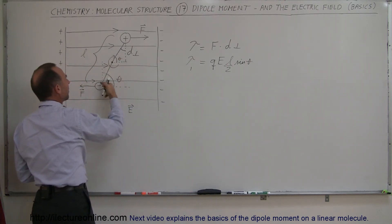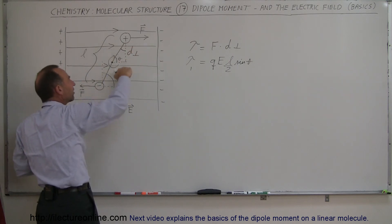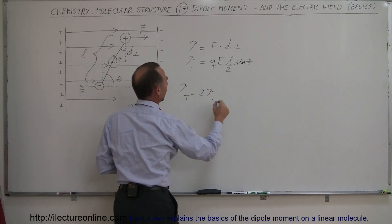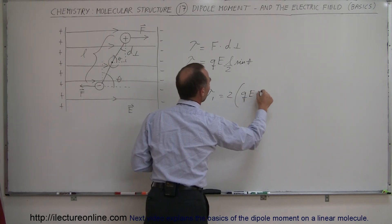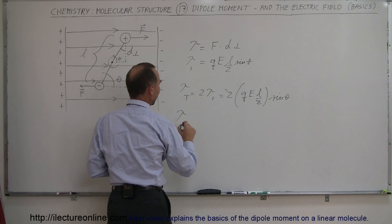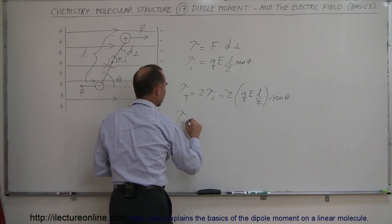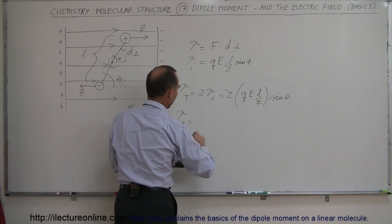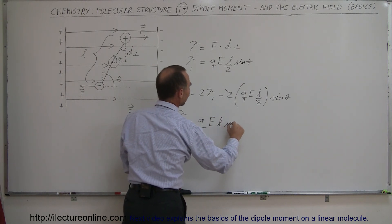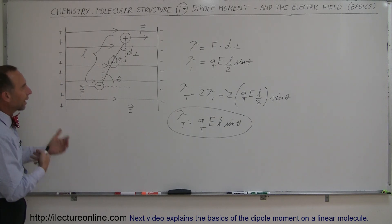The torque on the other charge would be the same amount because it's the same charge, same distance, opposite direction horizontally — but in the same rotational direction, so it simply doubles the torque. Therefore the total torque equals twice the torque on one charge, which is 2 × qEl/2 × sin(θ). The two's cancel out, so the total torque on a dipole in an electric field is τ = qEl sin(θ). This is the torque we try to measure on the dipole to determine how much dipole moment there is on the molecule.